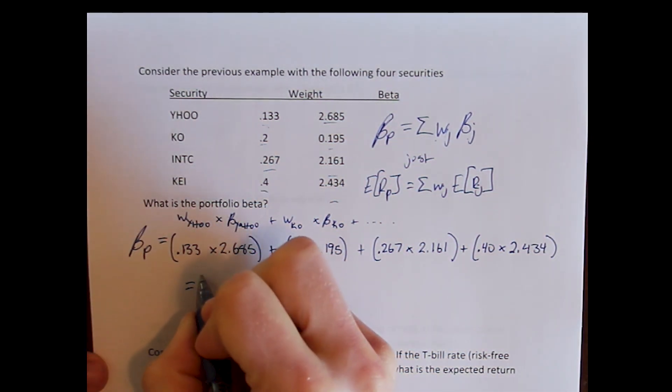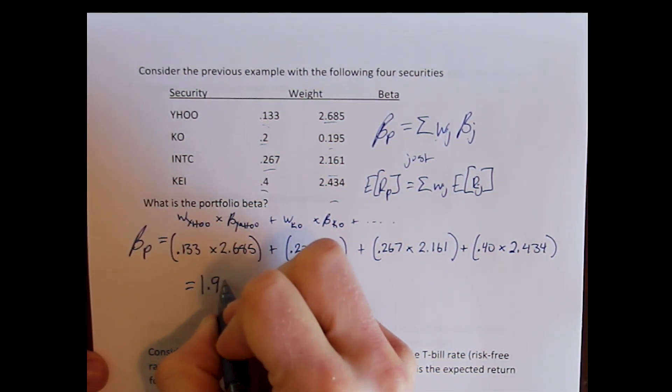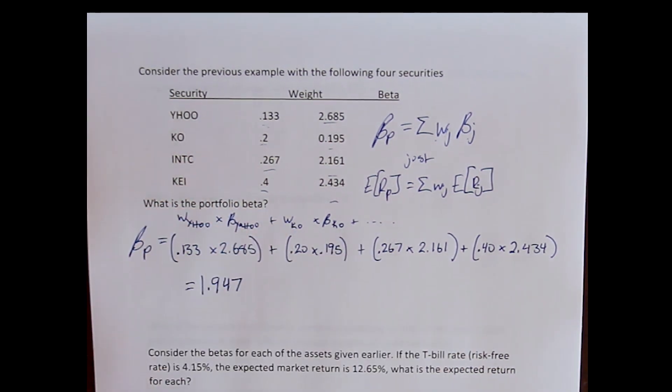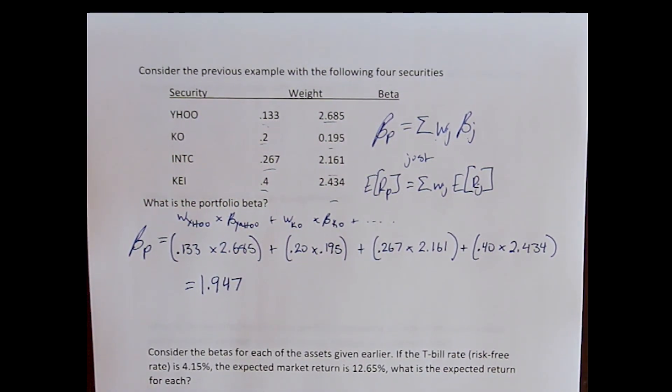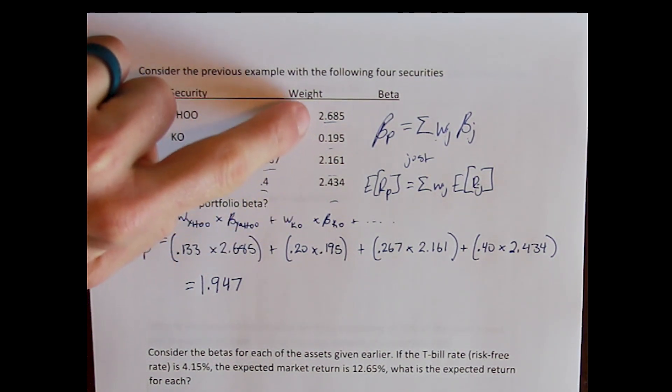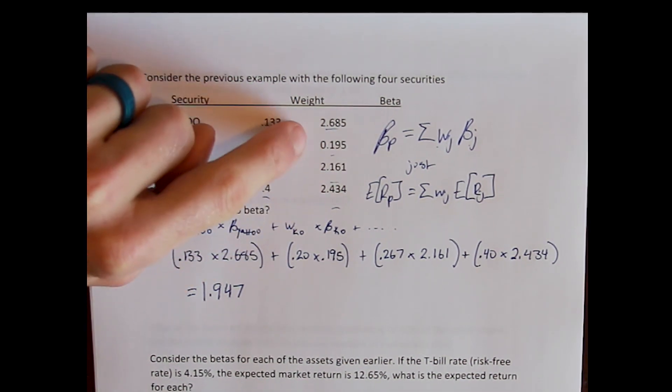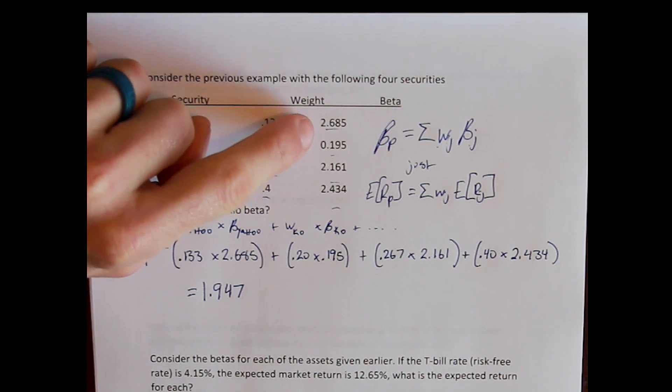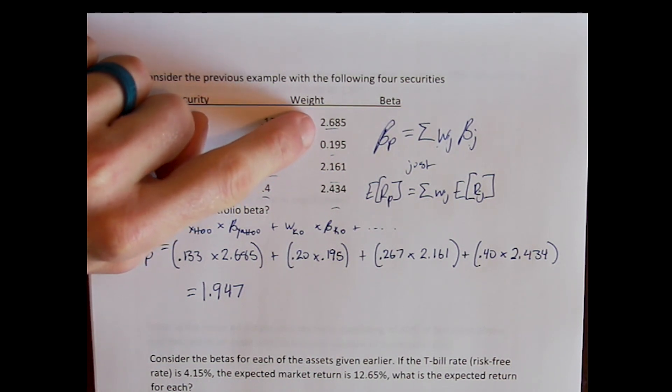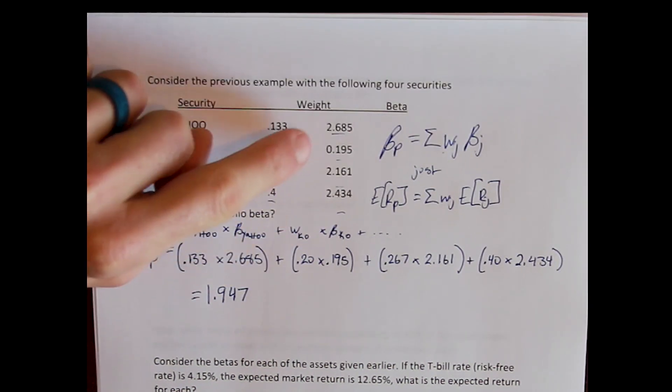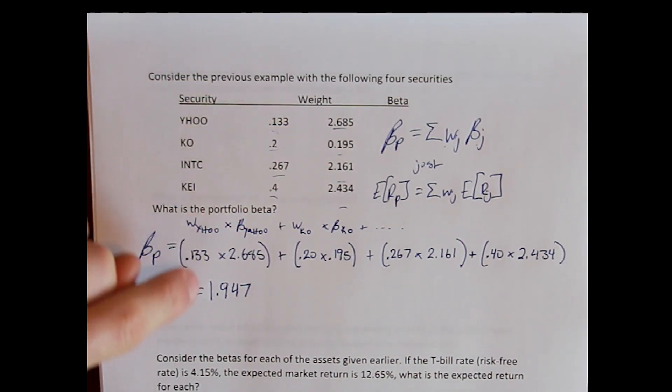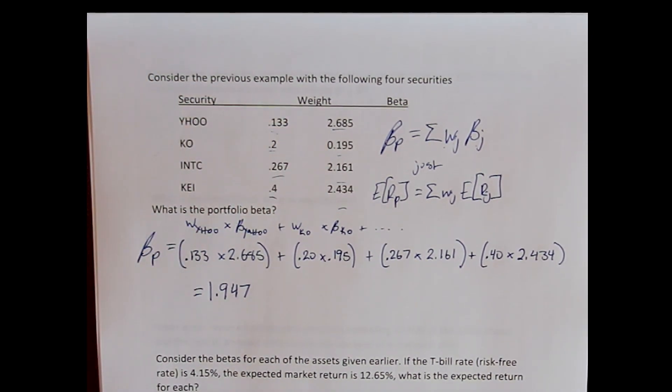Do our algebra correctly and we get a combined beta of 1.947. And again, notice that we formed a portfolio here that reduces our maximum beta, our maximum exposure to systematic risk. And of course, as we already talked about, it by definition also reduces our expected return. Our hope though, is that it reduces expected return by less than it reduces our risk.